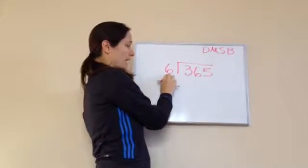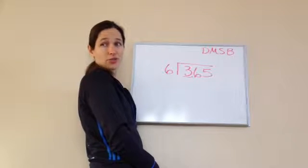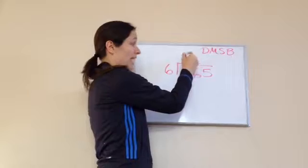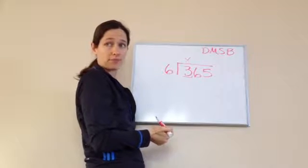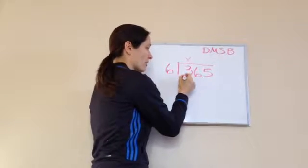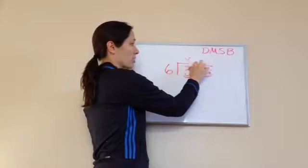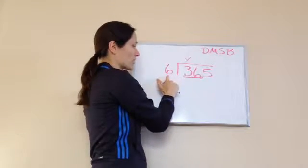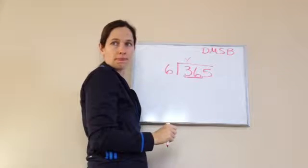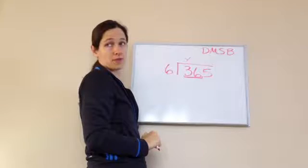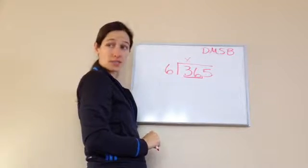Okay, so the first thing you need to look at is, will 6 go into 3? And it's less than that, so no. So you can either put a 0, you can put an X, or you can just put a space and not use it. Sometimes I like to use the X just to help me, and I'll erase it later. So because we can't use the 3, we're going to have to do the 36. And because we're working with 36, the answer to that number is going to go right here. So how many times would 6 go into 36? 6 times 6, very good.